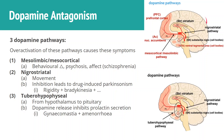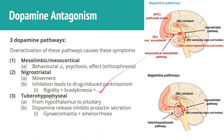There's also the nigrostriatal pathway, which is to do with movement. You might remember it from Parkinson's, where inhibition of it leads to drug-induced Parkinsonism. Because in Parkinson's disease, we have destruction of the substantia nigra. Equally, we can mimic the same effect, causing rigidity and bradykinesia, by inhibiting this pathway.